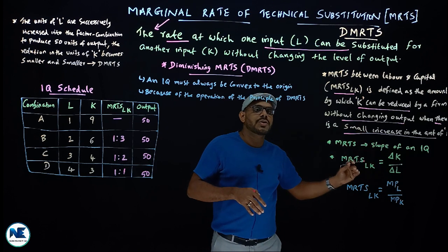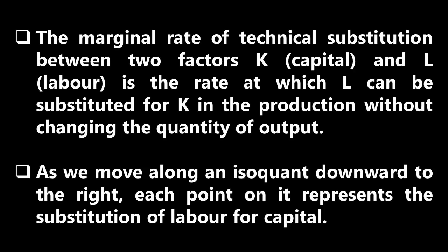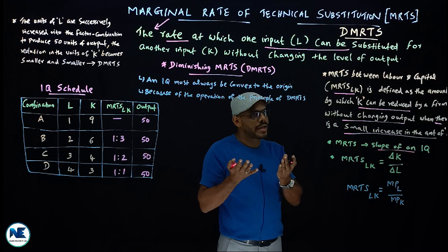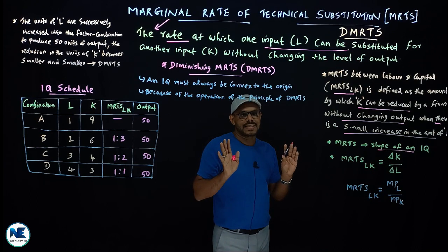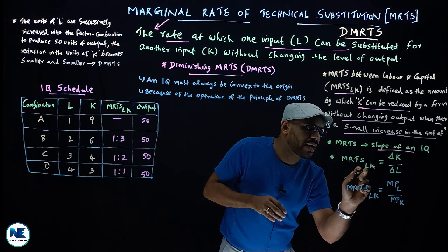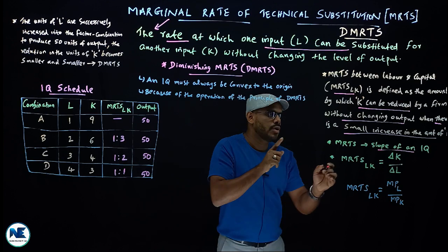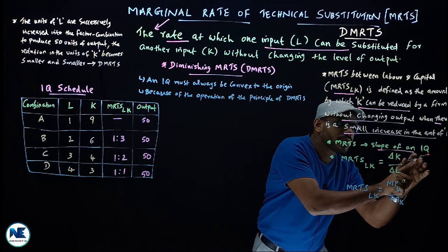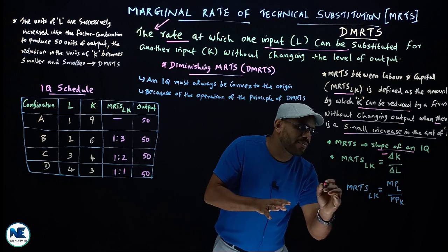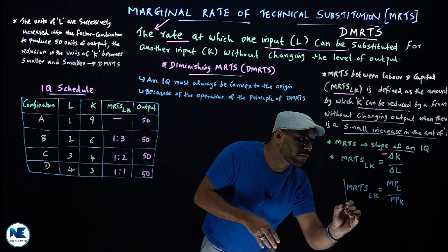The diminishing marginal rate of technical substitution is important. MRTS is the slope of an isoquant - vertical distance divided by horizontal distance. MRTS between labor and capital equals delta K divided by delta L. This can be written as MRTS_LK equals marginal product of labor divided by marginal product of capital.